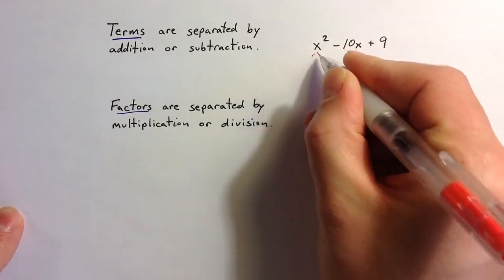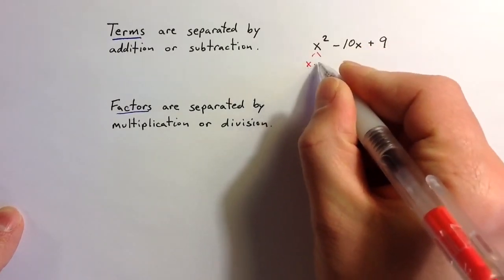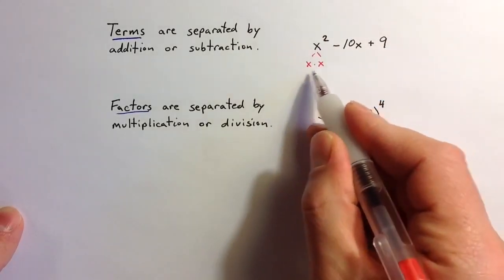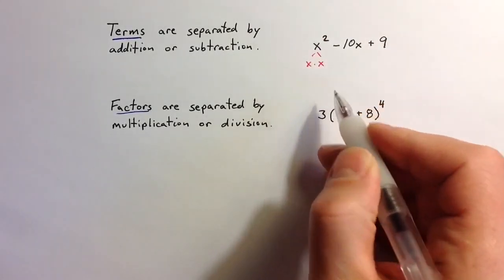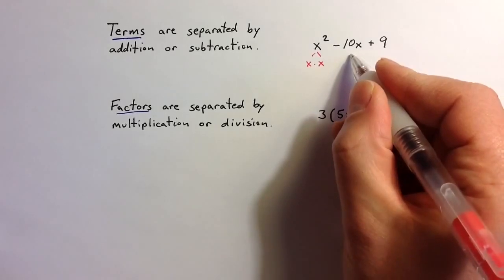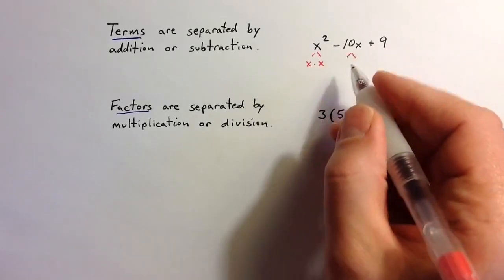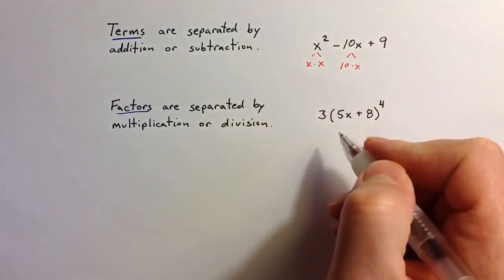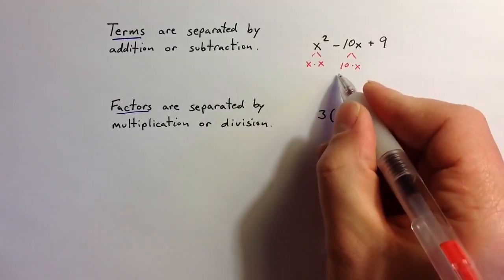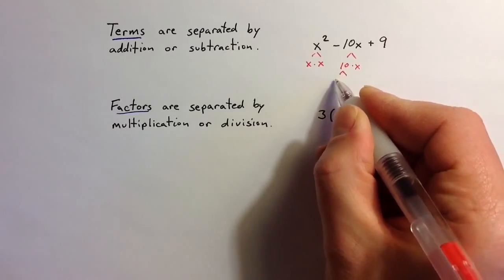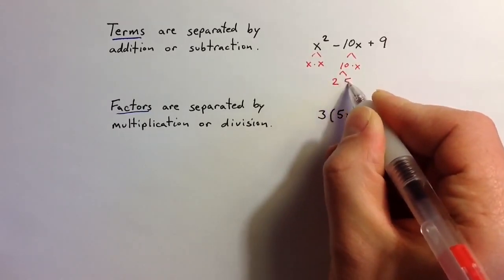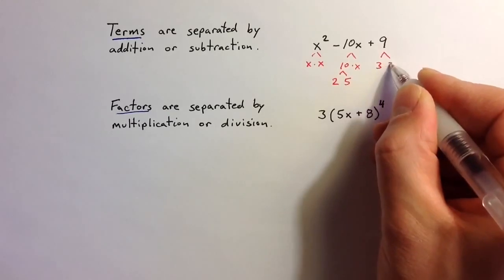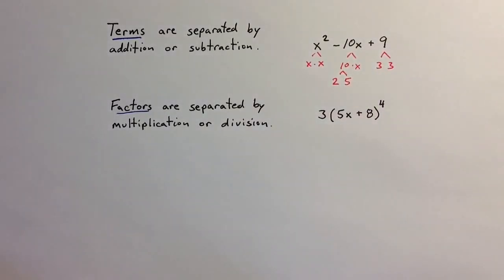The relationship between those two is important. x squared — I can think of that single term as x times x, so x is a factor within that term. Similarly, 10x is 10 times x, so 10 is a factor and so is x. We could also think of 2 as a factor, because 10 splits into 2 times 5, and 5 is a factor. And 9, we could think of that as 3 times 3, so those would be factors of the term 9.